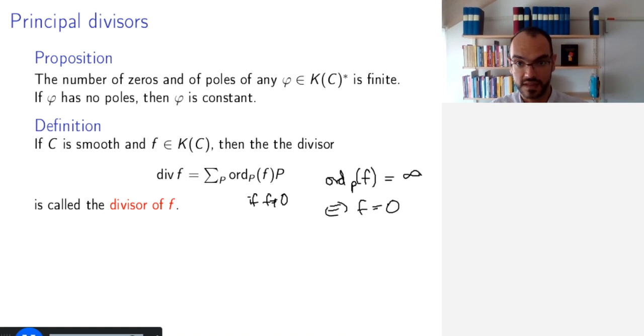So, this gives us really a function from K(C) to Z union infinity. That is just an added convention. So, this we call the divisor of f.